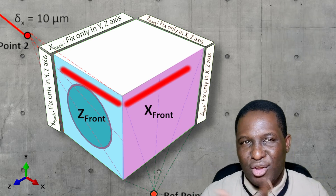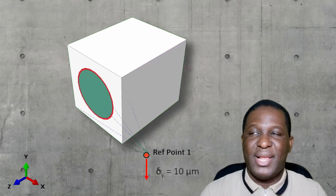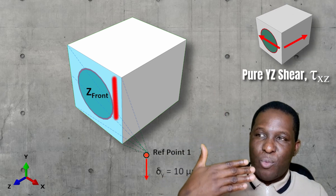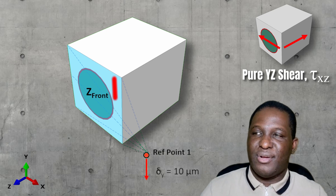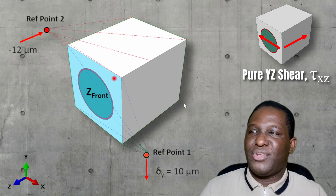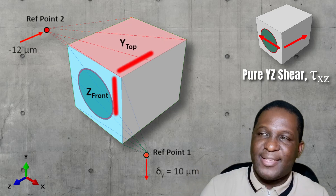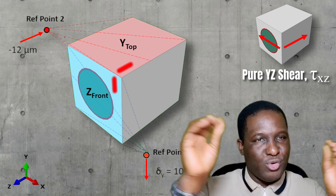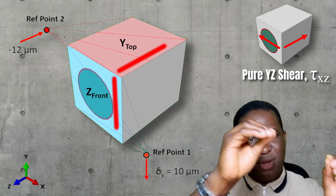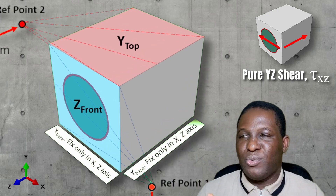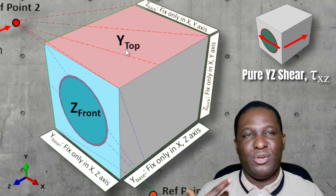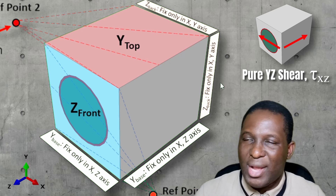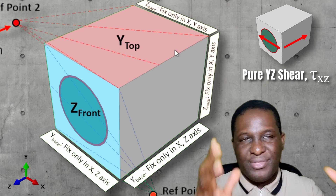This is really very important because if you don't get it right, you're going to get the wrong deformation. Finally, on the YZ plane, there will be a Z plane where I'm applying a loading in the Y direction, giving the YZ plane. On the Z plane, moving in the Y direction. On the Y top plane, you're deforming it in the Z direction, using two reference points to anchor the deformation applied on these two faces. You need to constrain the Z back in the X and Y direction to get the deformation.